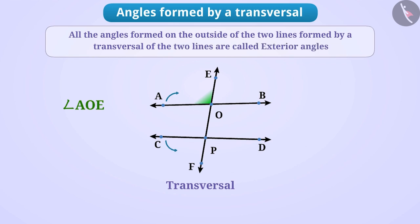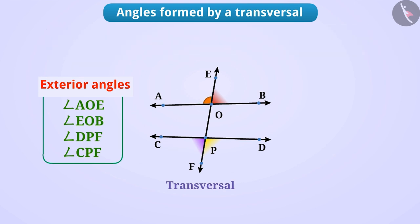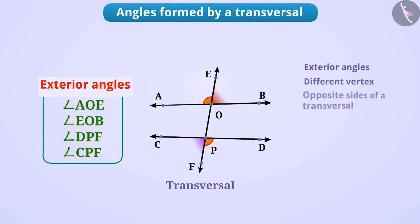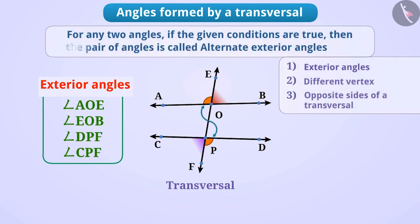So, angle AOE is not an interior angle but an exterior angle. Similarly, angle EOB, angle DPF and angle CPF are also exterior angles. If we consider angle AOE and angle DPF, we can see that both of them are exterior angles. Both have a different vertex and are on the opposite sides of the transversal. Such pairs are called alternate exterior angles.